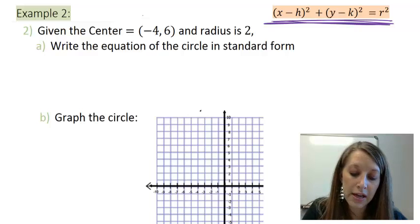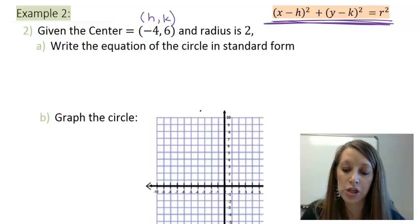So my center is given as (-4, 6). Well, the center stands for the h and the k value in your equation. Your radius is 2, so of course we will plug in 2 for our r value. And that's all we need to do, is plug in our h, k, and r value, and do a teeny tiny bit of simplification.